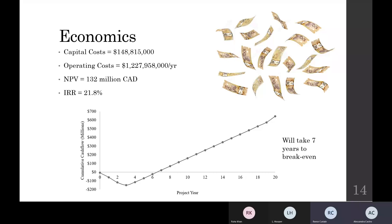Altogether with selling our ethylene and other by-products such as propylene, propane, and C4 products, in a 20-year project life we expect to have an NPV of $132 million, with the break-even point being at 7 years. The IRR of our project is expected to be 21.8%.